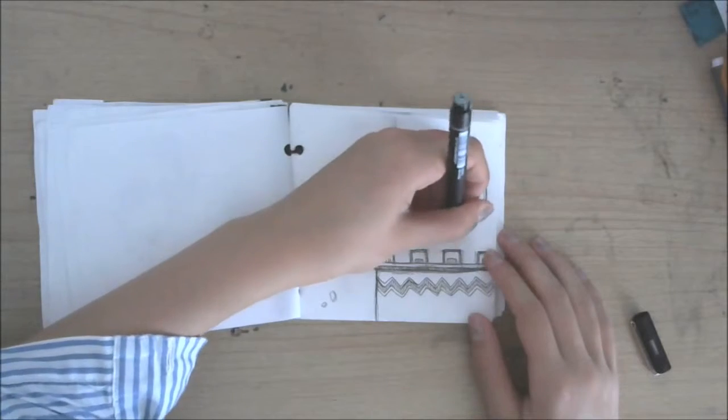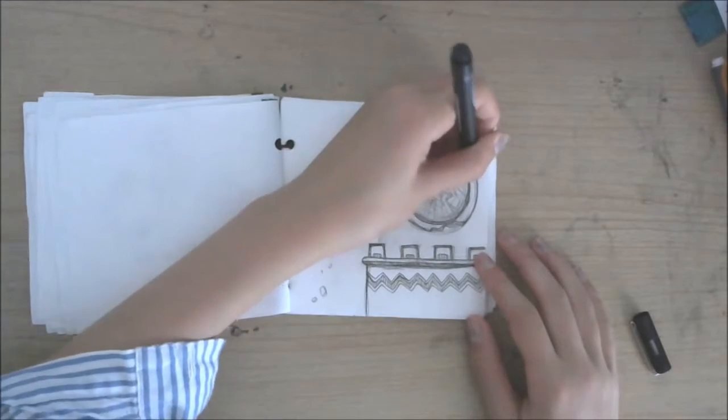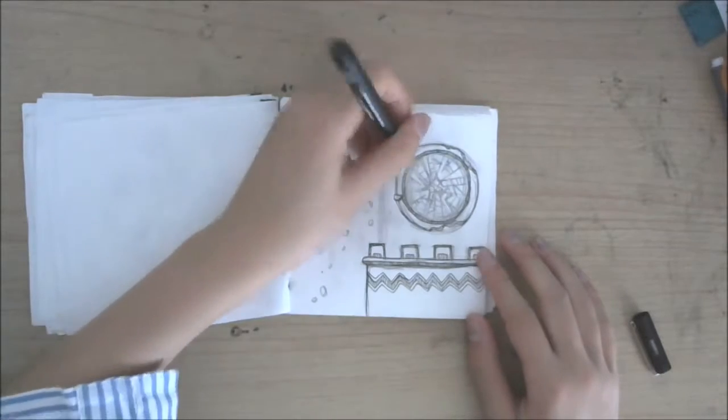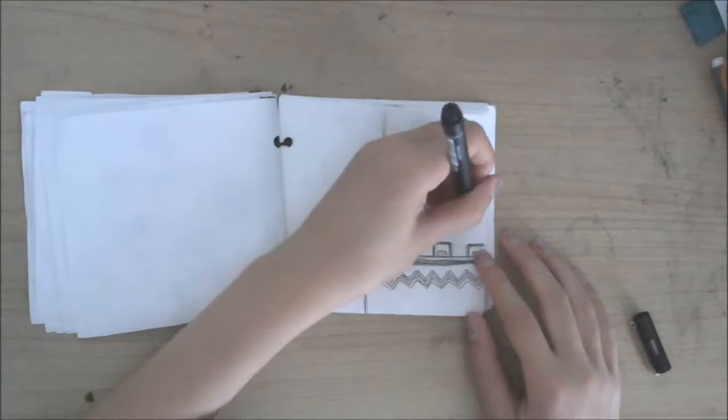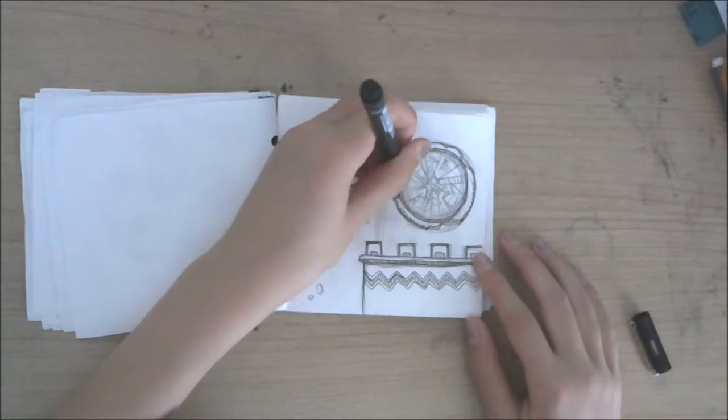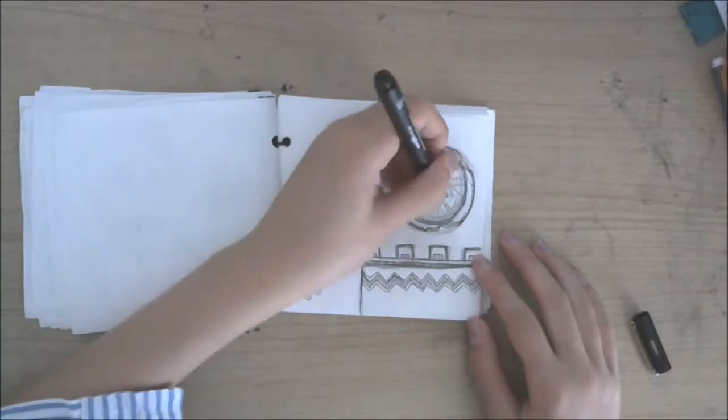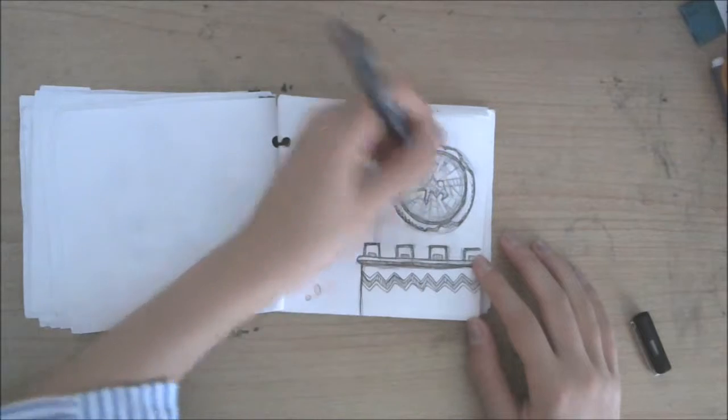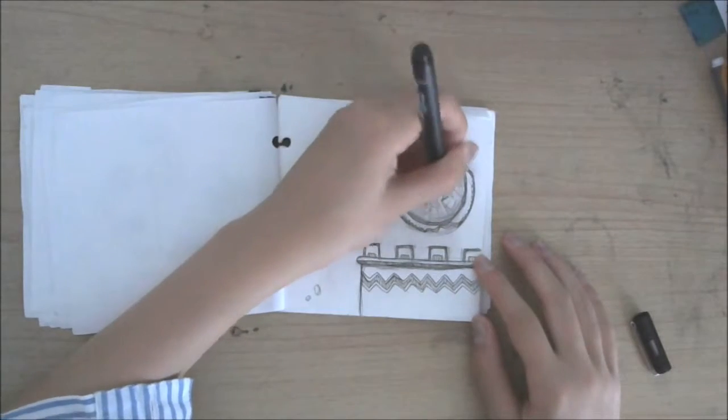But it still didn't quite stand out well, even after I outlined it all with a 0.3. So then I used a 0.6 artliner to do some really bold outlines, and I think it worked a bit better, but it still looks kind of imbalanced, and I really don't know what to do about it, so I'm just going to leave it the way it's finished. Yeah, it's a bit disappointing when you have a good idea and it doesn't turn out well, I guess.